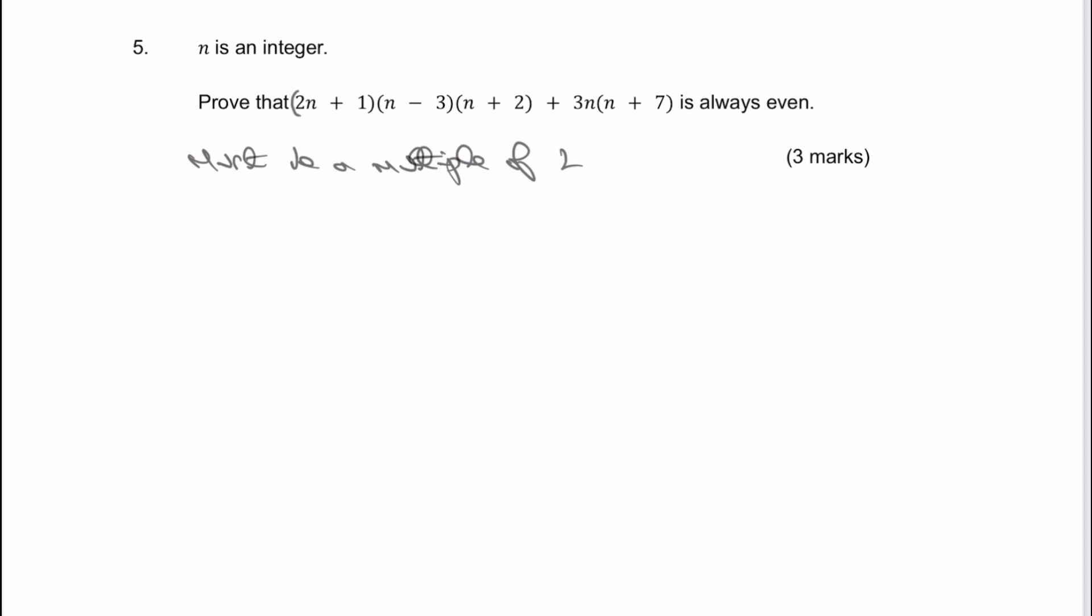And then really it's just a case of expanding this particular expression. So the way I would do it is I would concentrate firstly on the second set of brackets. So it's actually this set of brackets here and also this expansion here. So I'm going to leave the 2n plus 1 as it is. With the second one I'm going to get n minus 3 multiplied by n plus 2. And then I've also got 3n multiplied by n plus 7.